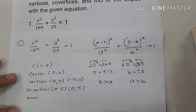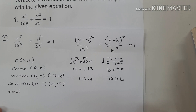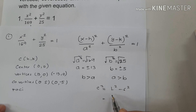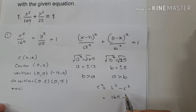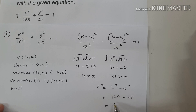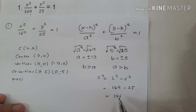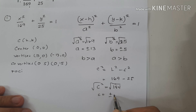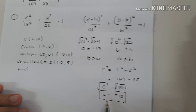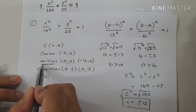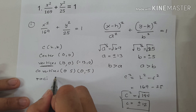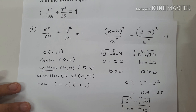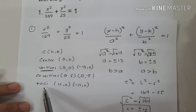Let's find the foci. To find foci, we use the formula c squared equals longer squared minus shorter squared. So longer is 169 minus shorter, which is 25. Therefore 169 minus 25 is 144. Extracting the root, c is positive and negative 12. Always remember, foci are always aligned with the vertices. So we add 12 to 0, giving us (12, 0) and (negative 12, 0).